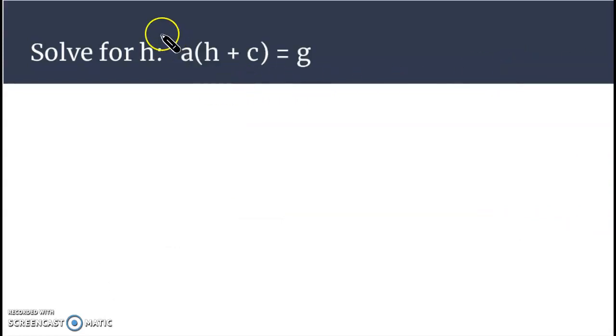So another one here, solve for h. The equation is a times h plus c equals g. We're going to distribute the a first and that's going to give us ah plus ac because distributing is when you're actually multiplying.